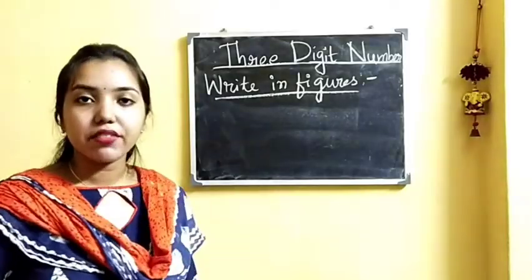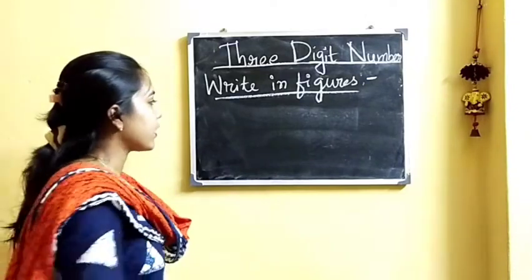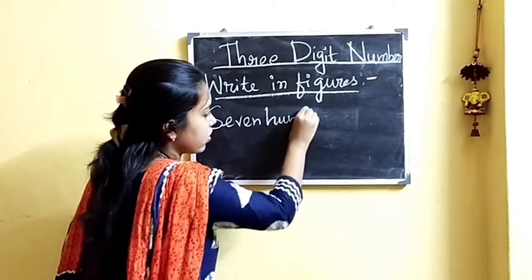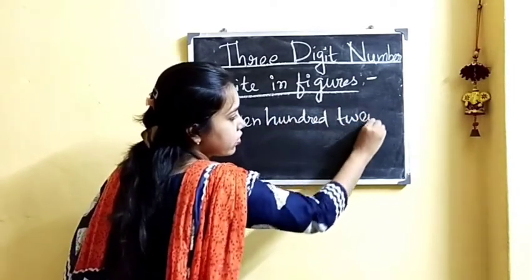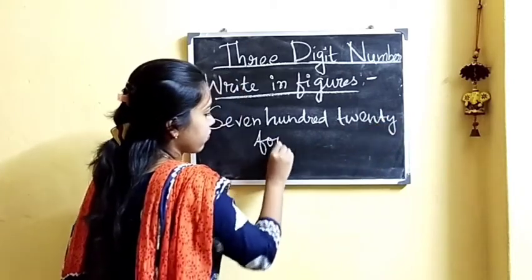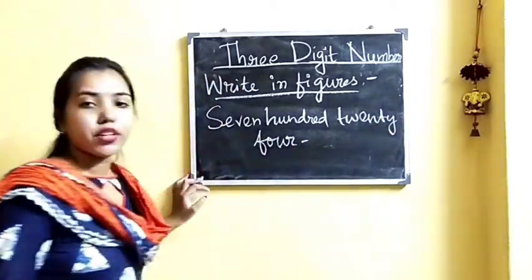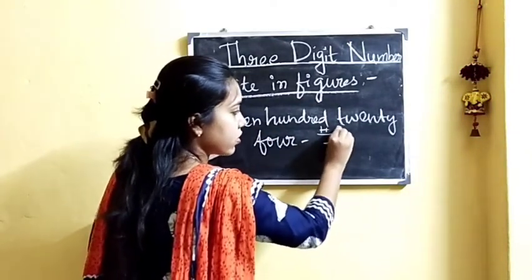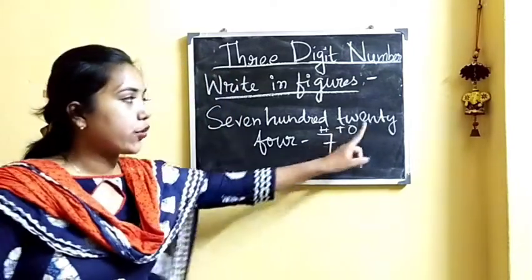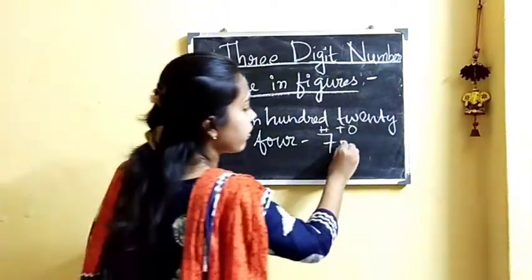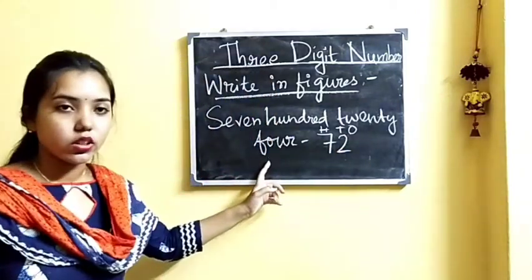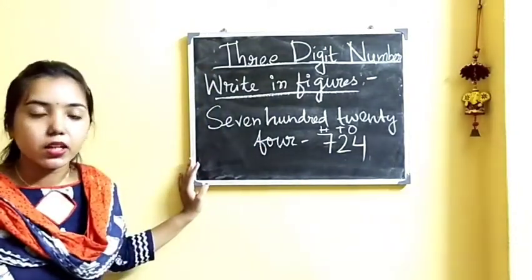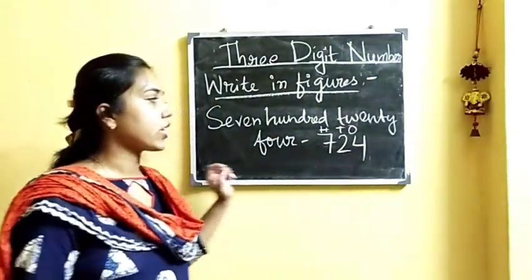Now we will learn to write given numbers in figures. Let us take the number 724. Here we have 700, so we will write 7 in the 100s place. 20 means 2 tens, so we will write 2 in the 10s place. And 4 means 4 ones, so we will write 4 in the 1s place. So the number becomes 724.